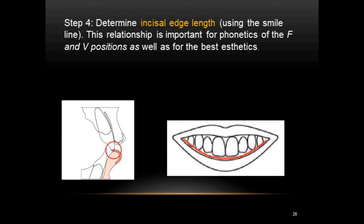Step 4 is to determine the incisal edge length using the smile line — which is a frontal view of the incisal edge relationship with the lip. A convex smile line makes the patient look younger whereas a reverse smile line is very unaesthetic; the smile line can also make a happy person look sad or vice versa. The incisal edge length is also important for phonetics of F and V sounds — while pronouncing these sounds the incisal edge should touch the vermilion border of the lower lip, and if the length is too much then F will sound like V.